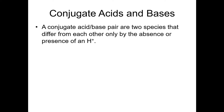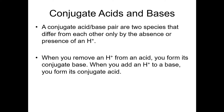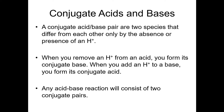More generally, a conjugate acid-base pair are two species that differ from each other only by the absence or presence of a proton — an H⁺. When you remove an H⁺ from an acid, you form its conjugate base. When you add an H⁺ to a base, you form its conjugate acid. What's important to understand is that there is not a distinction between things that are acids versus conjugate acids, or bases versus conjugate bases — every acid is the conjugate acid of something, and every base is the conjugate base of something. And any Bronsted acid-base reaction that we write is going to consist of two conjugate pairs.